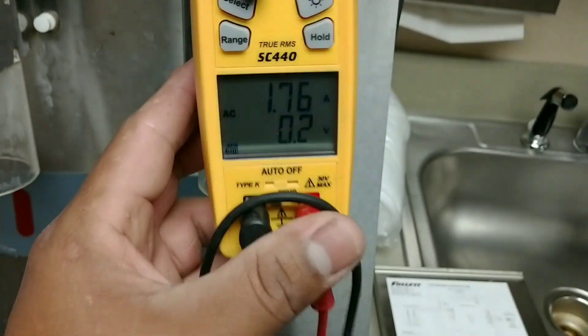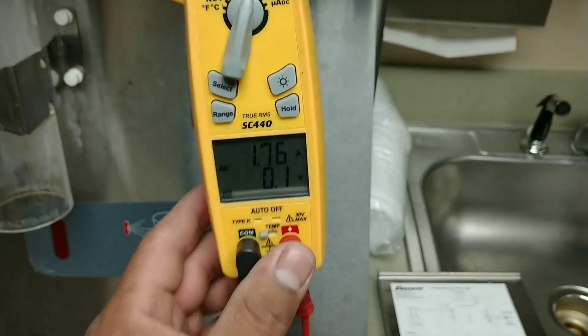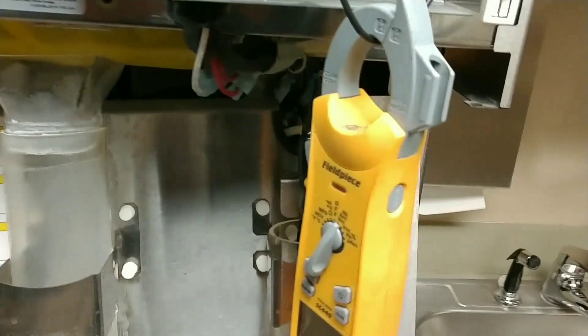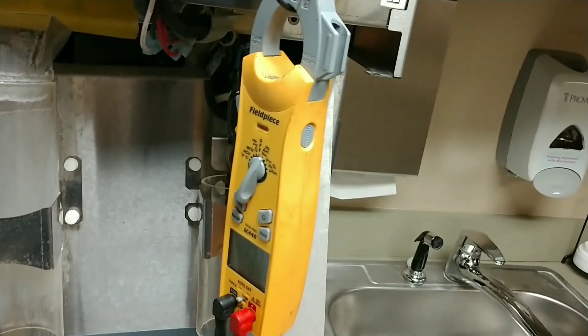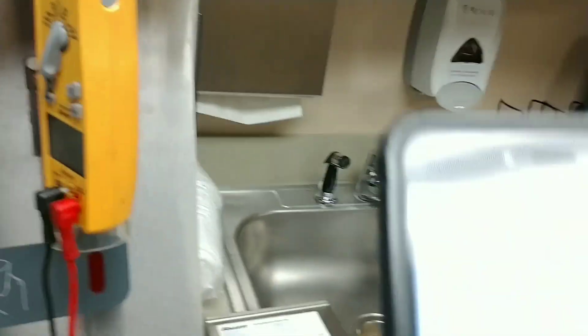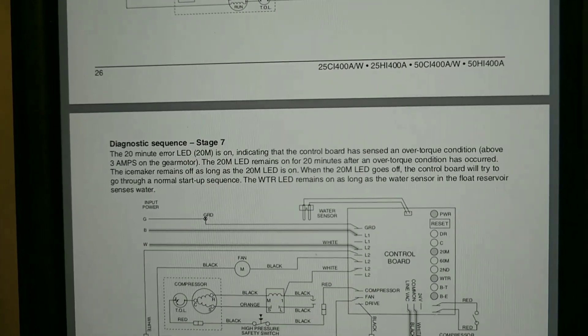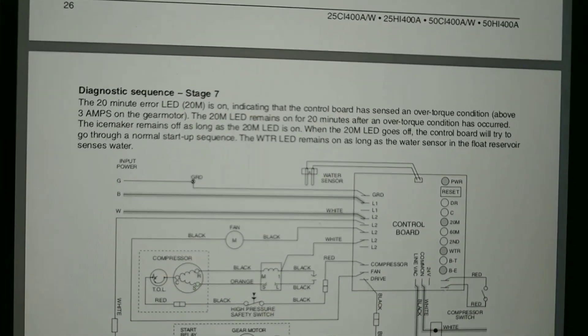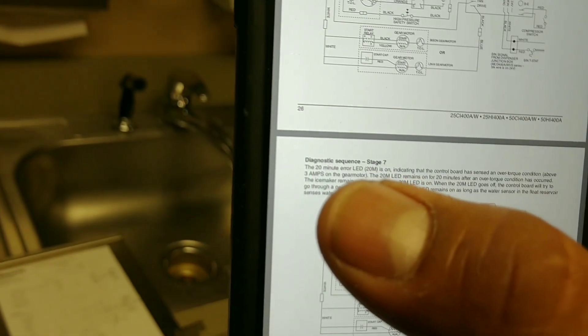I don't remember exactly what the torque rating is supposed to be. I did the bearings on a different machine at this same building. But if you see here, right here it says over torque condition above 3 amps on a gear motor. So anything over, yeah right there, 3 amps right there on the gear motor.